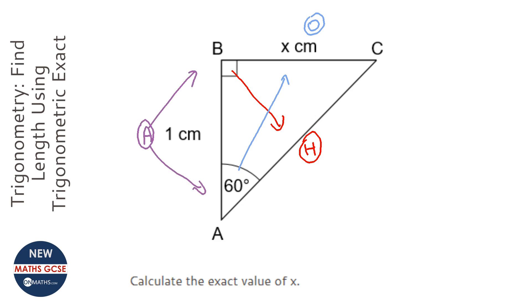And that's the one between the right angle and the marked angle. I'm going to then cross out the one we're not using. Well A is 1cm, O is X, so H isn't useful to us.